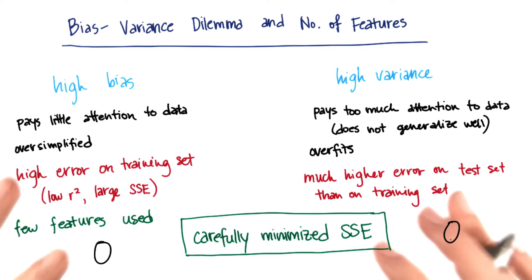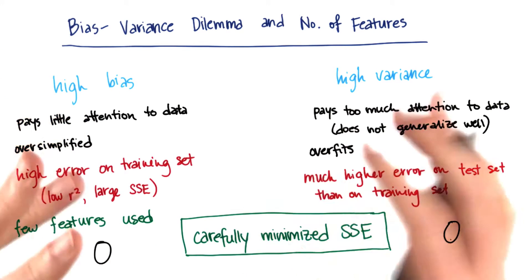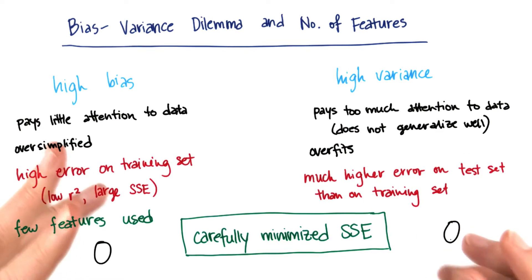In the case where you're using lots of features to get the most tightly fitting regression or classifier that you can, that's a classic high variance situation. You want to be careful that you're not overfitting to the data when you're doing this.